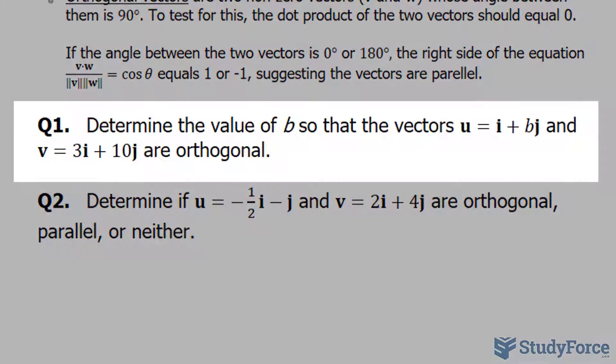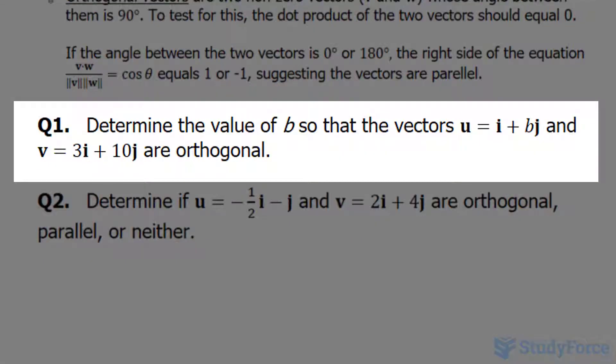Beginning with question number one, we're asked to determine the value B so that the vectors U and V, given these components, are orthogonal.